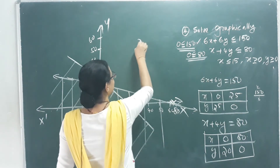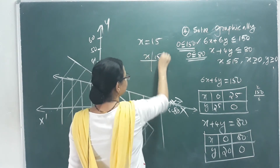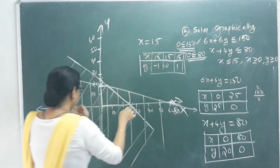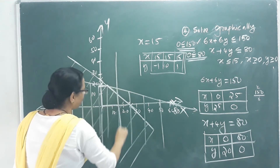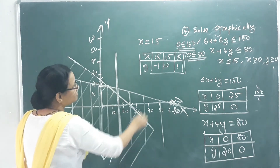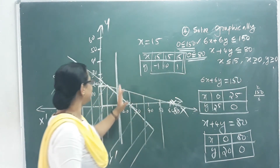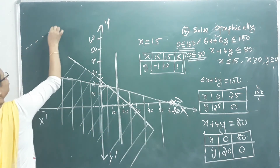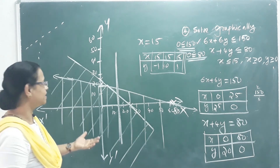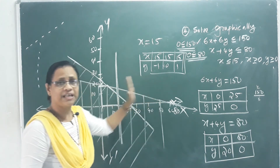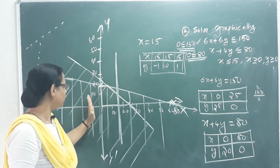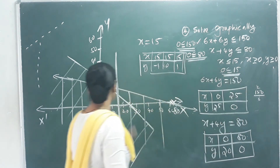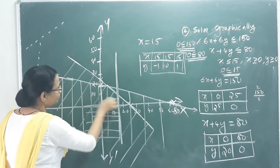For the inequality x less than or equal to 15, we draw a vertical line at x equals 15. The line is darkened (solid) because it includes points on the line. Testing x equals 0: 0 is less than or equal to 15, which is correct — so we shade the region to the left of the line as the solution set.